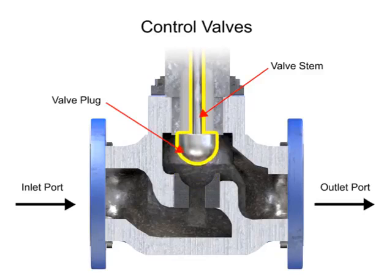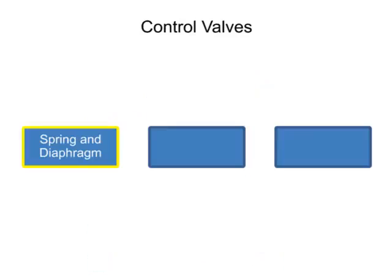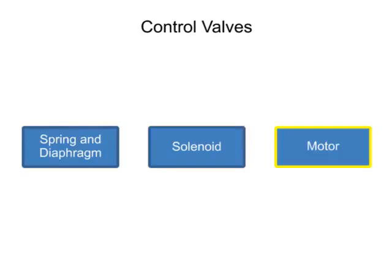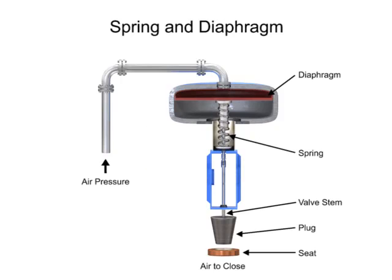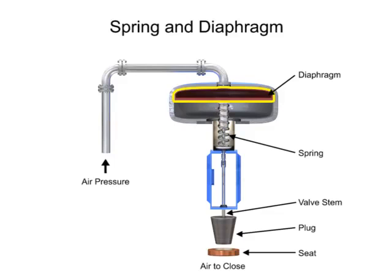Three actuator types are used in control valves: spring and diaphragm, solenoid, and motor. As the name suggests, the spring and diaphragm actuator uses a spring and a diaphragm to move the valve stem and plug.